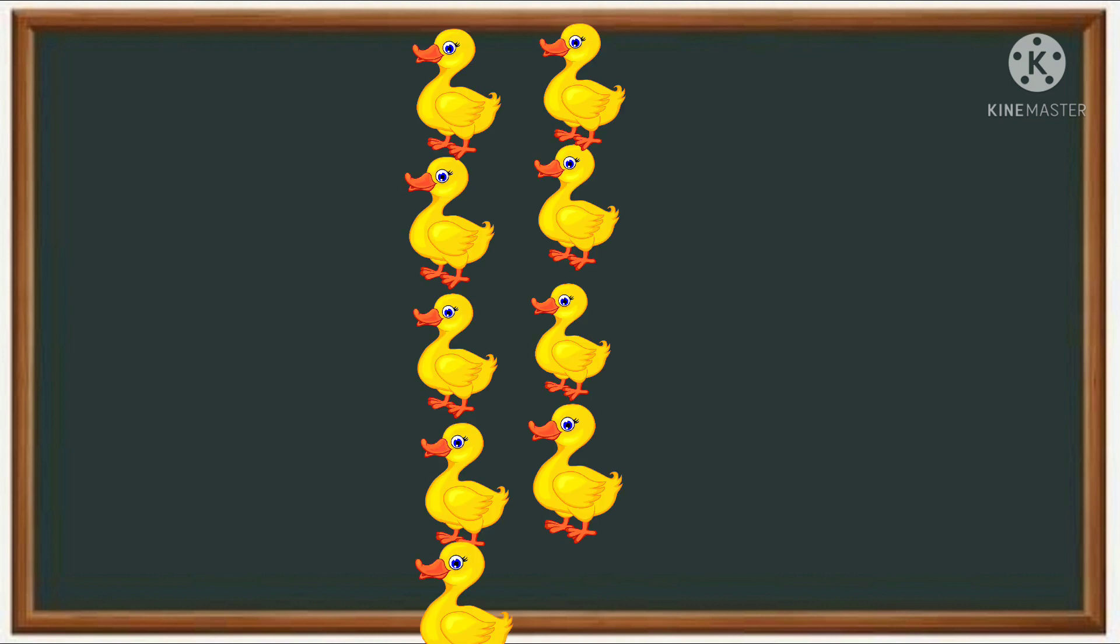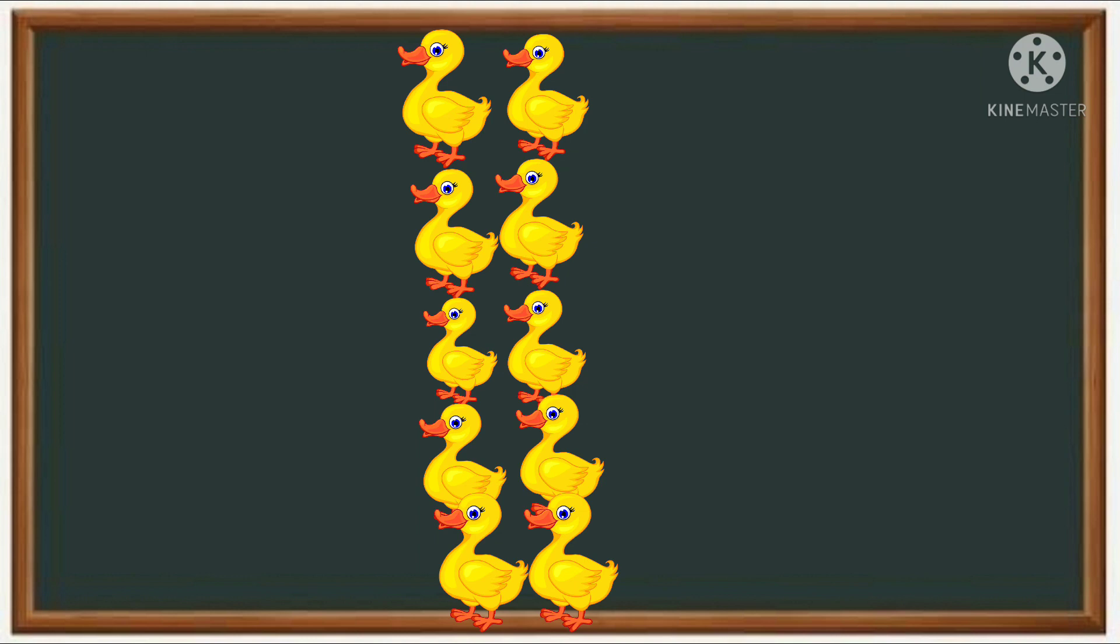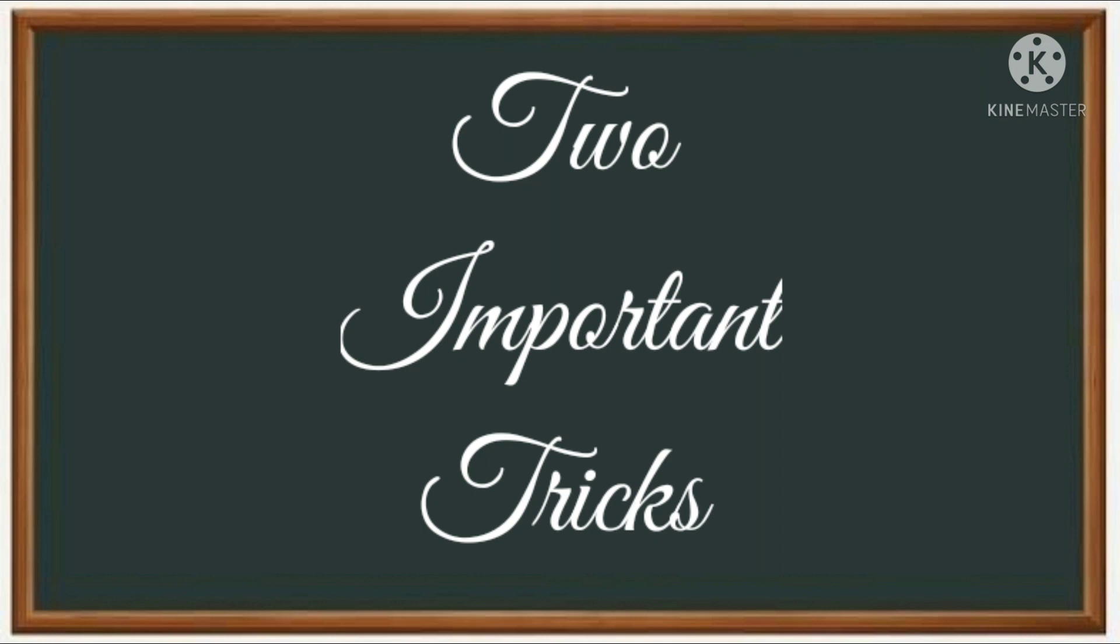Now moving on to the next number, nine. We spot one ducky without a friend. That means nine is an odd number. Moving on to the next number, ten. Now you can tell, right? Is ten even or odd? Yes, ten is even because each of our ducky has its own friend.